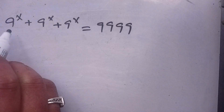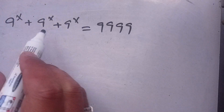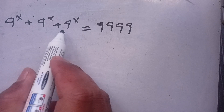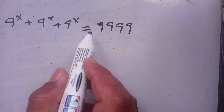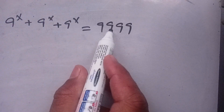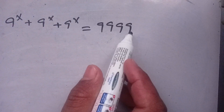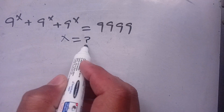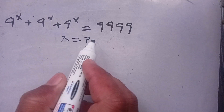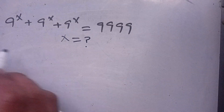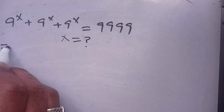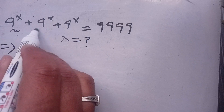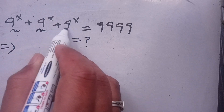Everyone, in today's video we are going to solve this exponential equation: 9 power x plus 9 power x plus 9 power x is equal to 9999, and we have to find the value of x which satisfies this exponential equation. Let us solve this. First of all, we see that 9 power x is common on each of the terms on the left hand side.